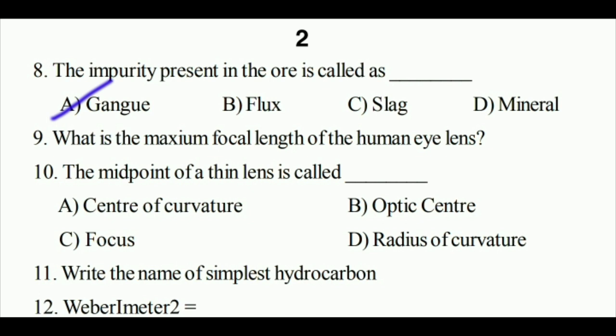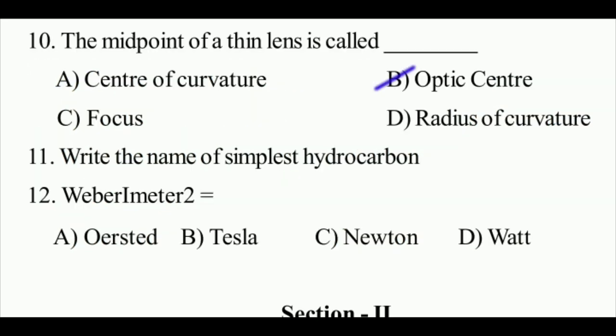The impurity present in ore is called gangue. What is the maximum focal length of the human eye lens? 2.5 centimeters. The midpoint of a thin lens is called the optic center. Write the name of simplest hydrocarbon.